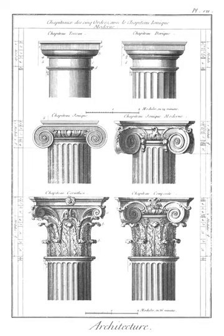Caulicolus: stalks with two leaves from which rise the helices or spiral scrolls of the Corinthian capital to support the abacus. Cella: the inner chamber of a temple in classical architecture.